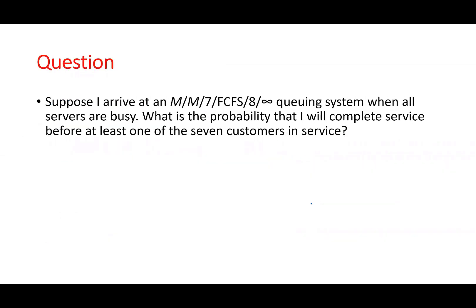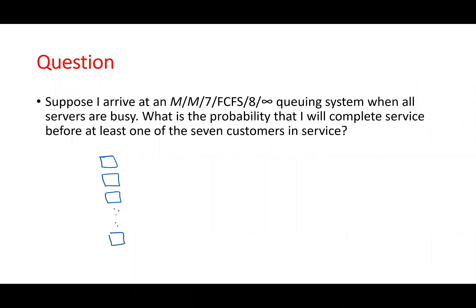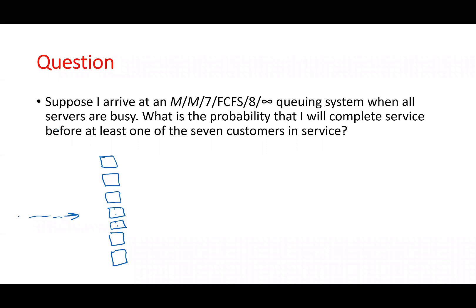Let's see how the system looks. There are seven servers — one through seven — and people are waiting. The system has a capacity of eight. When there are eight people in the system it's full and they close the doors. When you arrive, all servers are already busy with seven people, so you become the eighth. The system then closes.